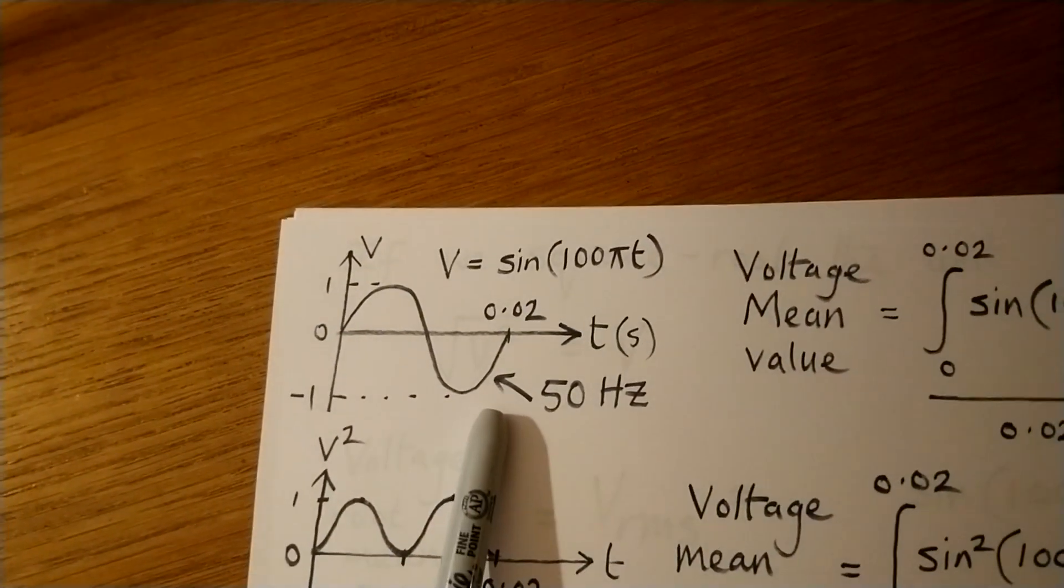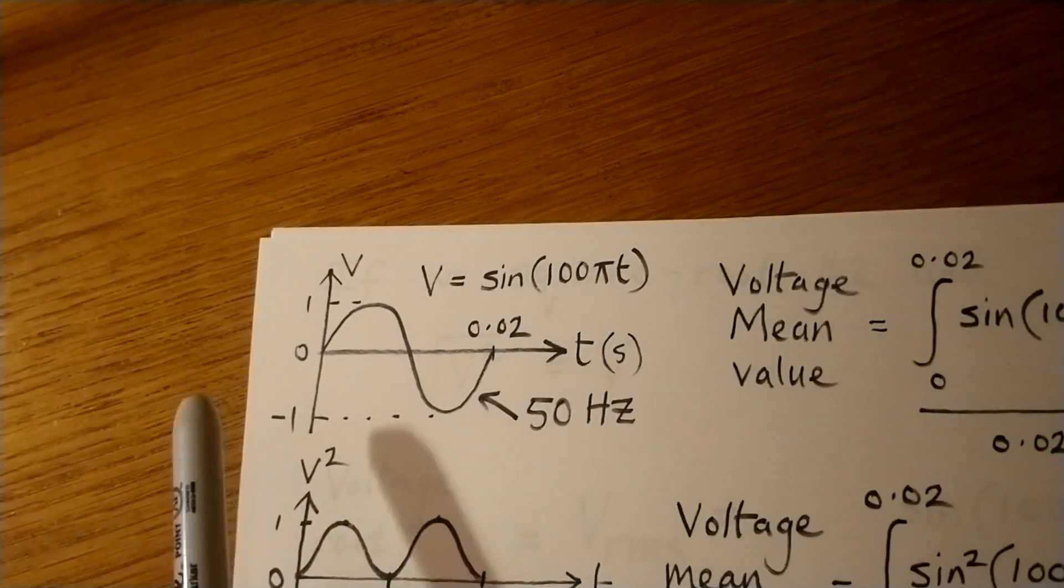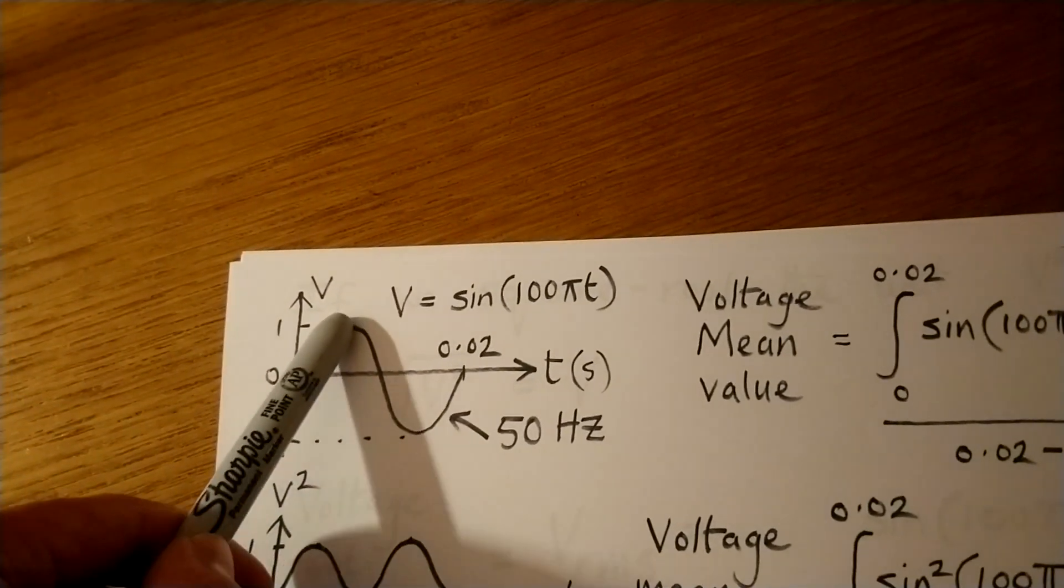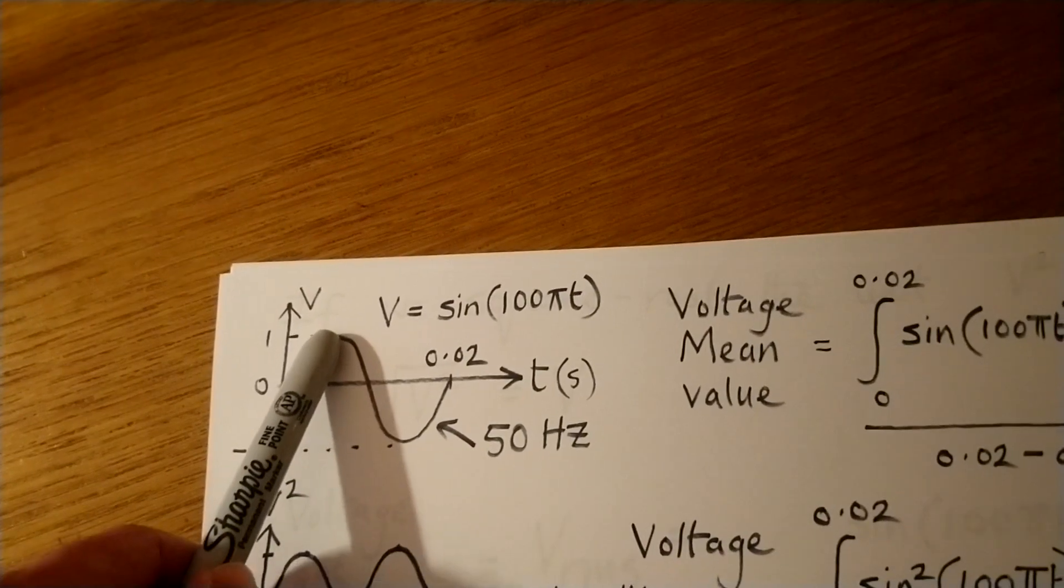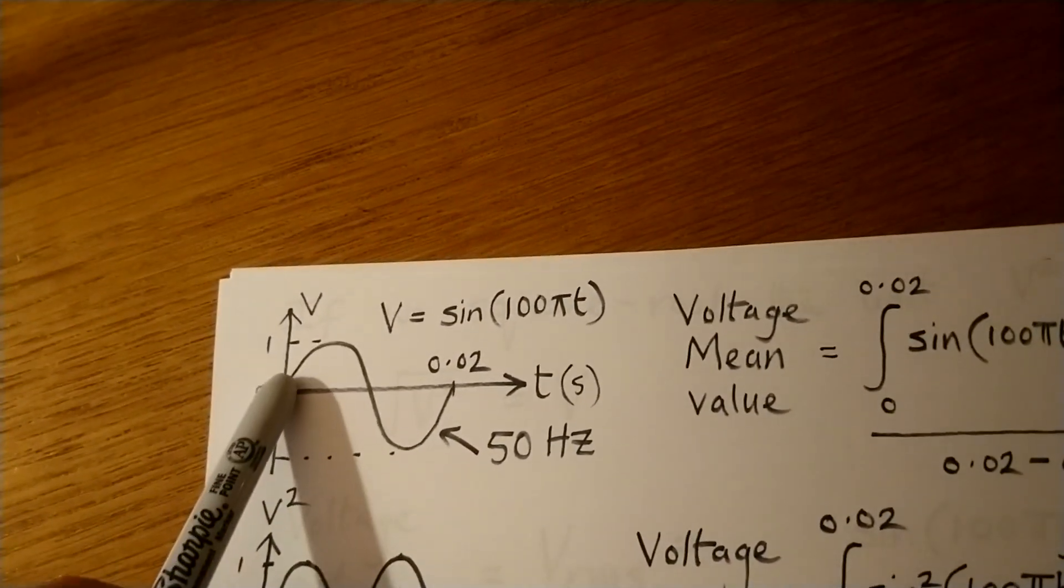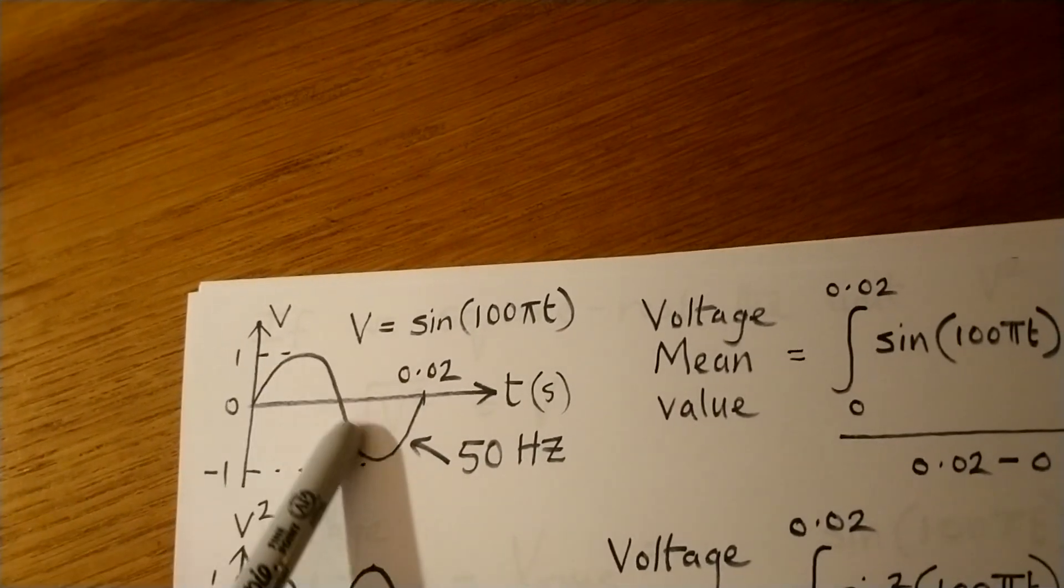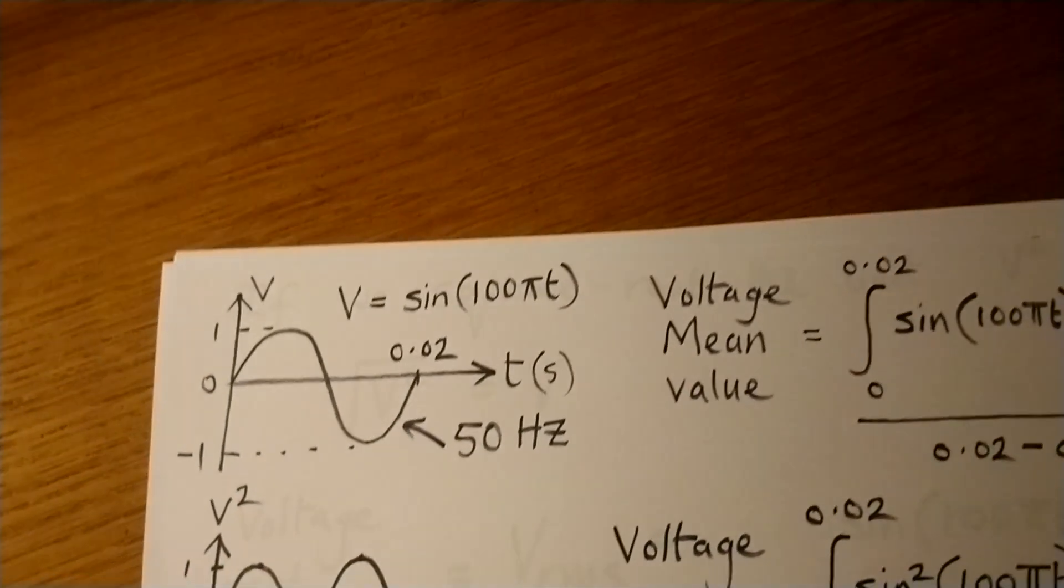So our first thought might be, well, the mean value would be a good way to characterize the voltage because we can't really characterize the peak voltage because that only happens for a little instant in time over one period. And as we can see, the voltage is changing the whole time. So maybe the mean would be a better way of doing things.